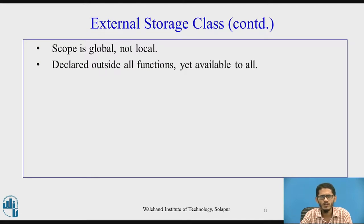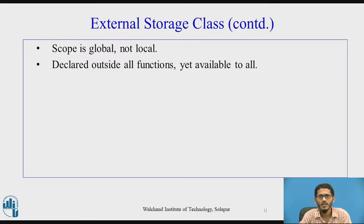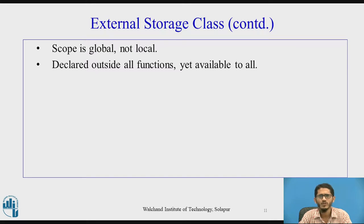Since an external variable is declared outside all the functions, it is still available to functions in which it has not been explicitly declared. However, there could be cases where the same variable name is used for a global variable as well as for a variable inside a function. In that case, preference will be given to the local variable.